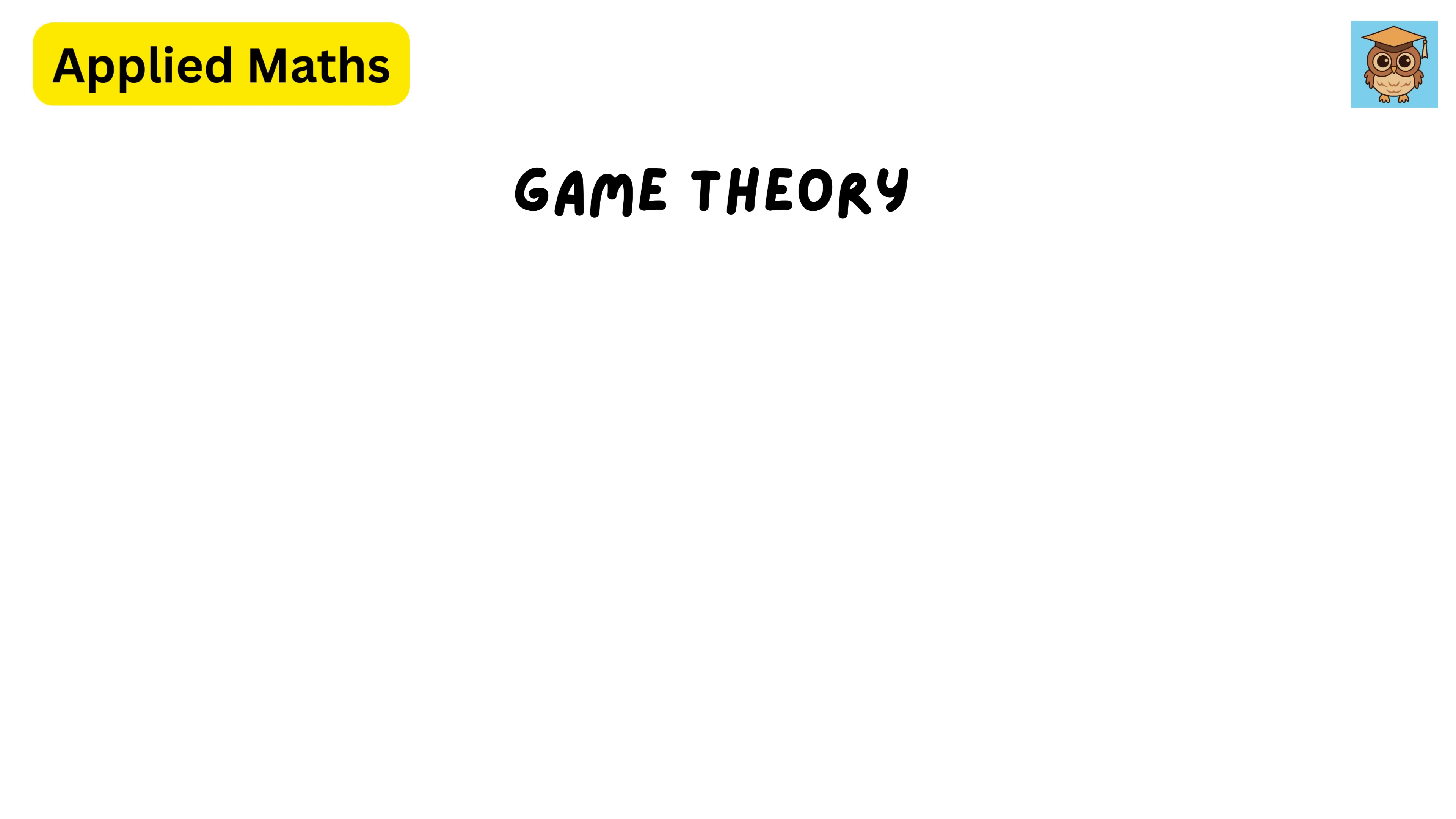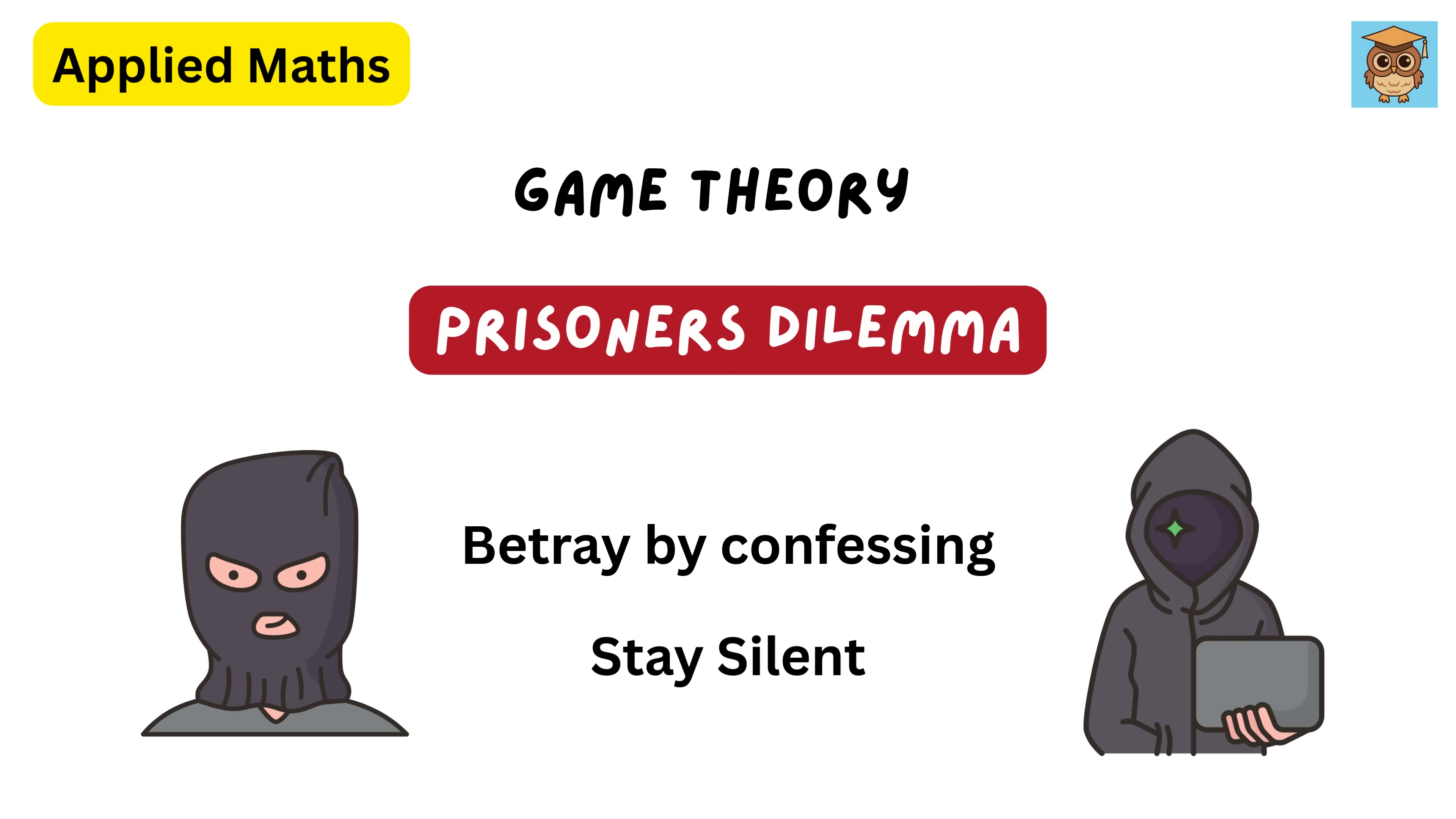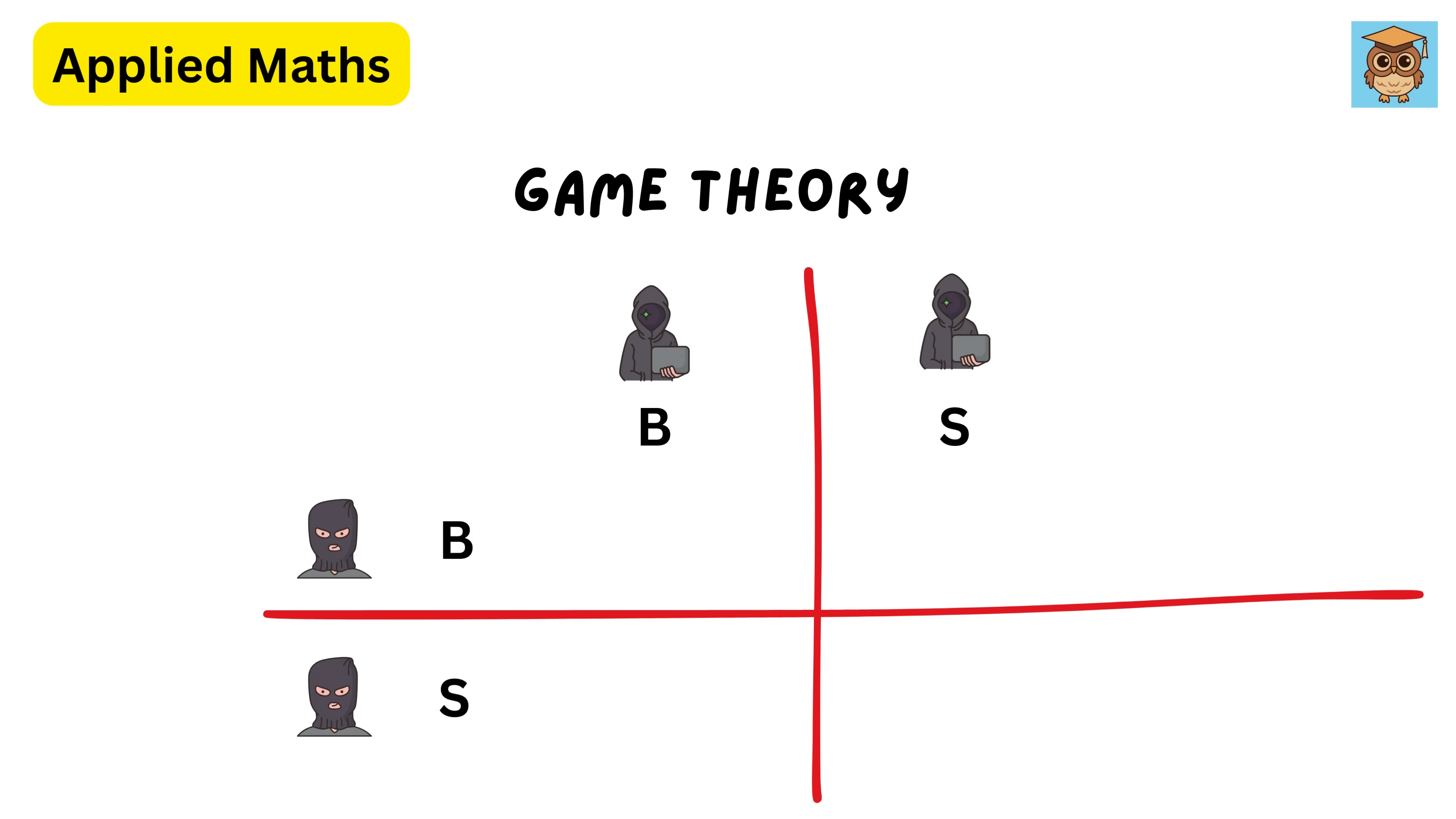A famous example of game theory is the prisoner's dilemma, where two criminals are arrested and interrogated separately. Each must choose whether to betray the other by confessing or stay silent, which means to cooperate. If both stay silent, they get a light sentence.